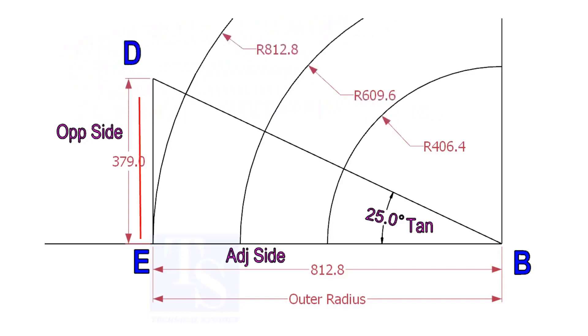Draw the line ED vertically and the slant line DB. I hope now you will be able to draw a line in any degree.